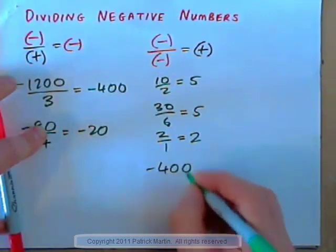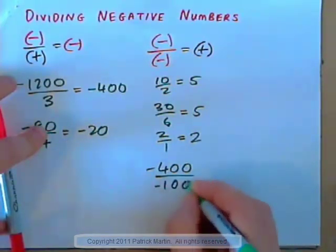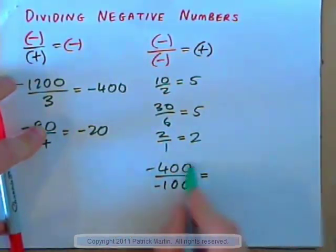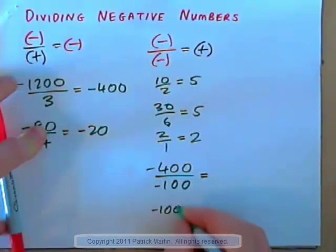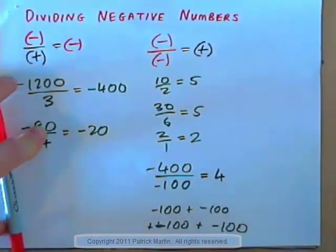An electricity bill of $400, and each month's electricity costs $100. So how many bills of $100 are in a combined bill of $400? How many negative 100's are contained in negative 400? Negative 100 plus negative 100 plus negative 100 plus negative 100 — that's four bills. So negative over negative gives positive.